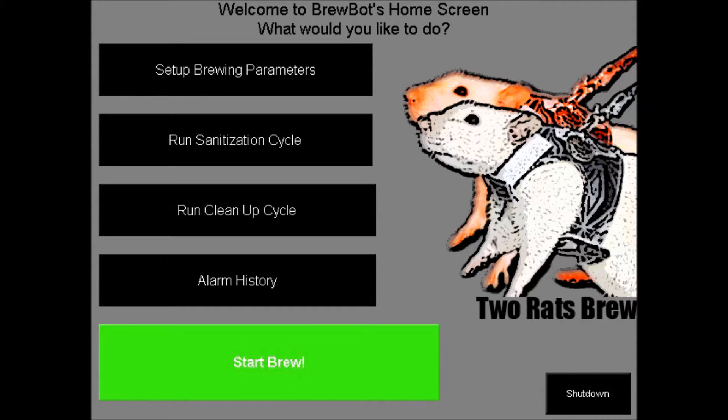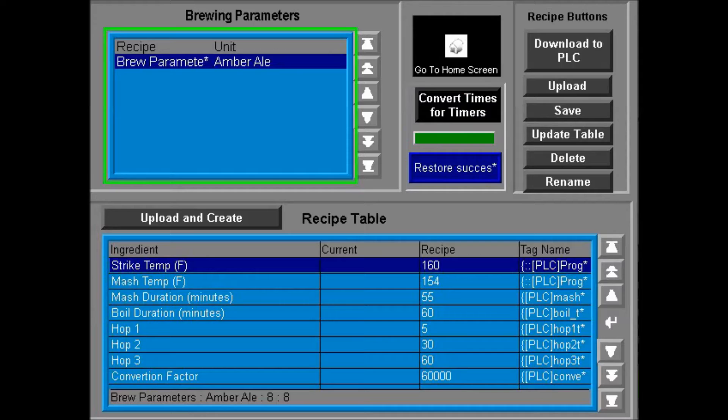From the main menu of the HMI, you have several screens and choices to choose from, the first of which is the brewing parameters. Different beer recipes call for different times and temperatures.